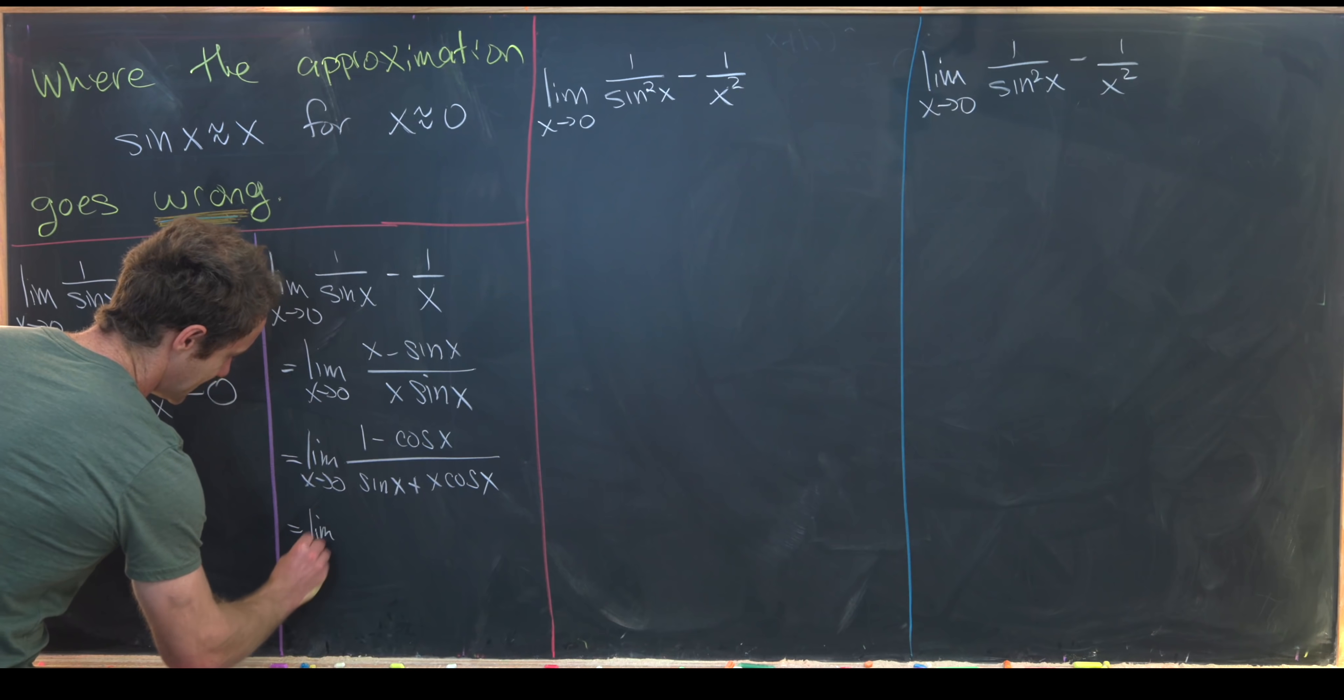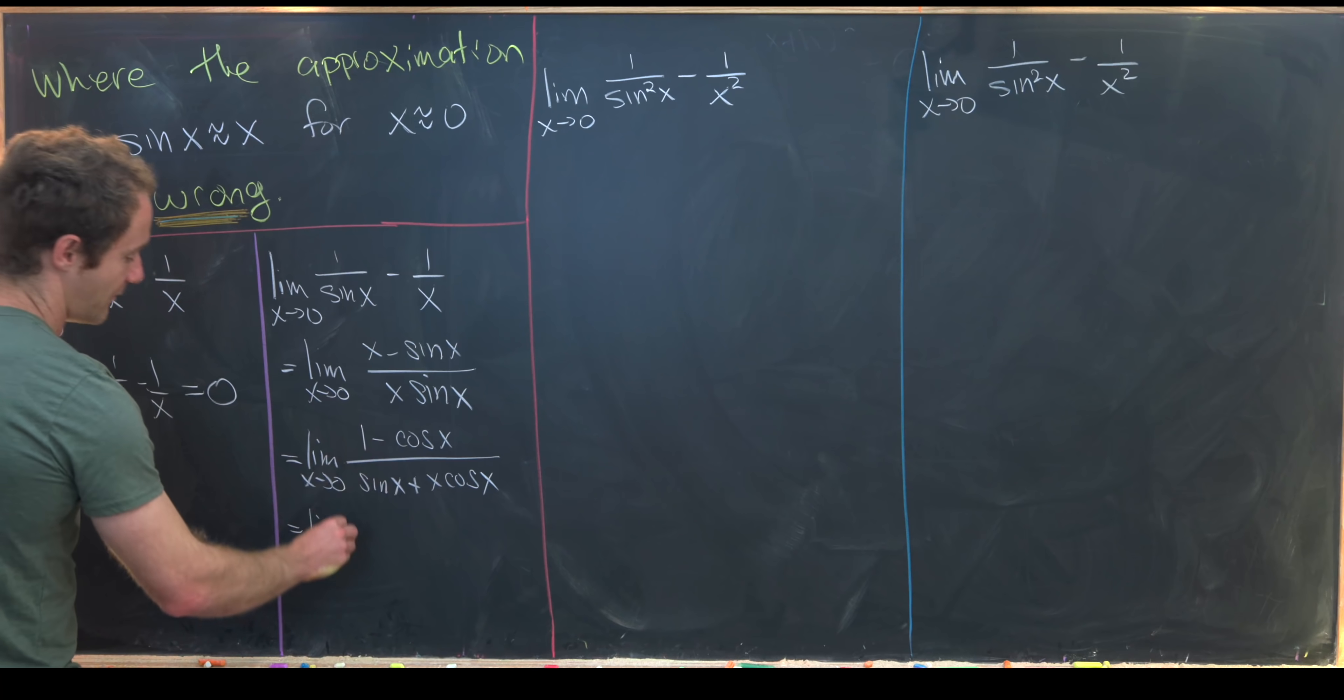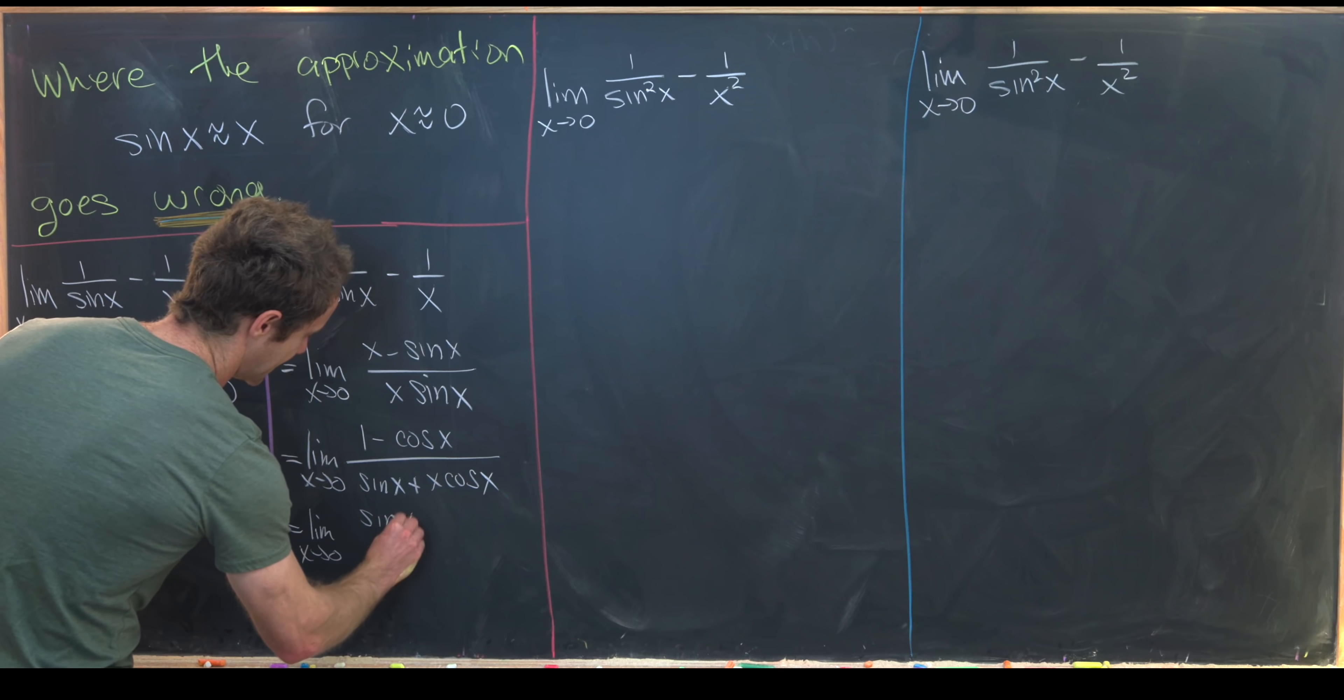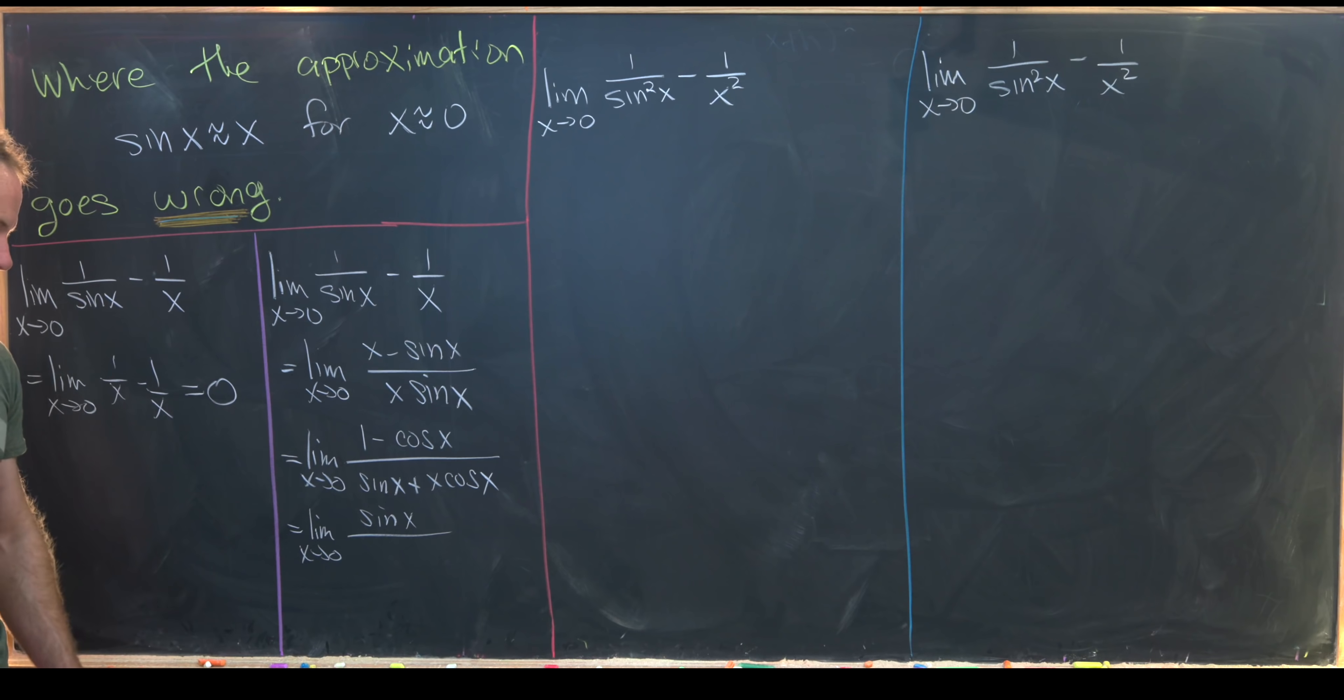So that's going to give us this limit as x approaches zero of the derivative of minus cosine is sine. So we have sine x in the numerator. Notice the derivative of one is zero, so that's gone.